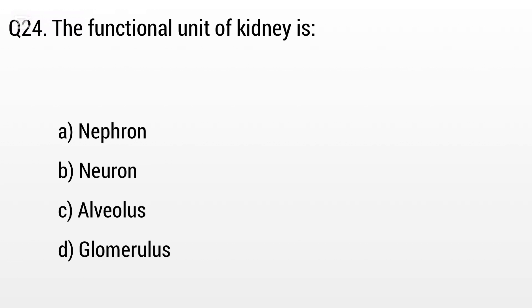Question 24. The functional unit of kidney is: Option A: Nephron, B: Neuron, C: Alveolus, D: Glomerulus. The right answer is option A, Nephron.